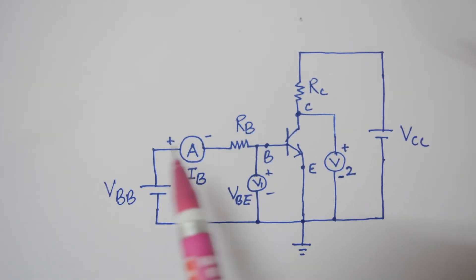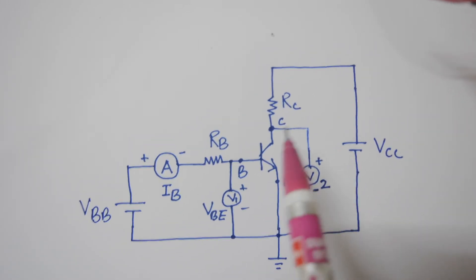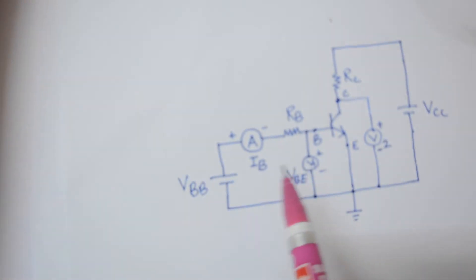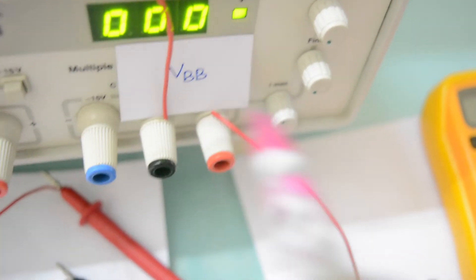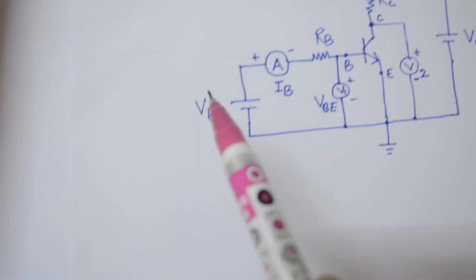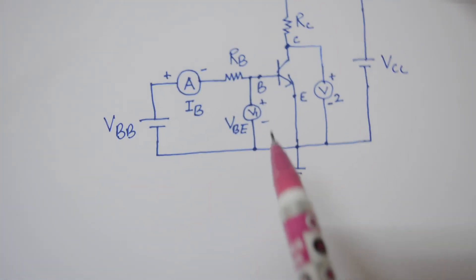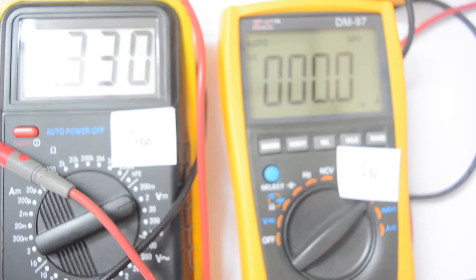Now we will connect an ammeter in the base-emitter circuit and one voltmeter between the base and emitter terminal, and another voltmeter between the collector and emitter terminal. The ammeter connected in the base-emitter circuit from RB will measure IB. The voltmeter between base and emitter will measure VBE, as shown in the diagram, and the other voltmeter between collector and emitter will measure VCE.